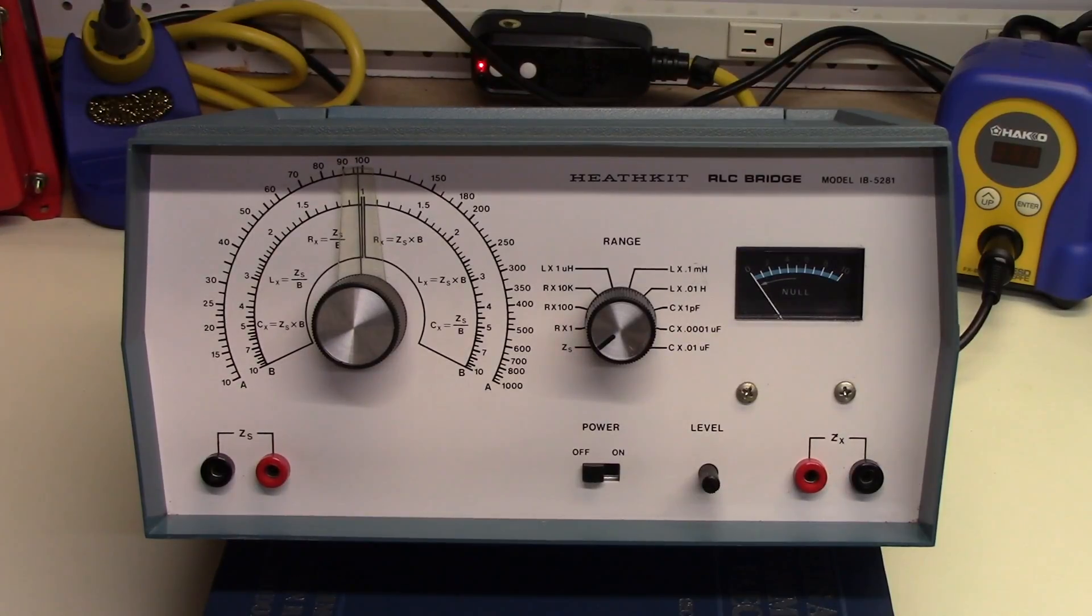The IB-5281 was sold in the 1970s and the 1980s, and it was meant to be an affordable bridge for hobbyists and service technicians. That said, as we'll demonstrate shortly, it was capable of pretty good performance and accuracy, even compared to modern LC meters that are based on digital approaches.